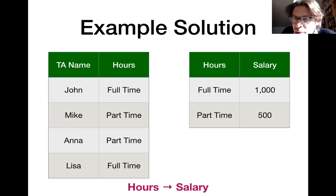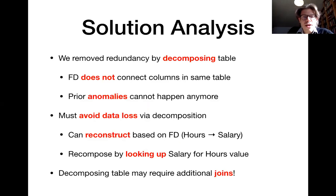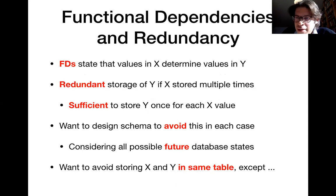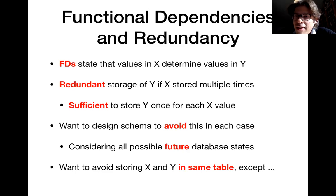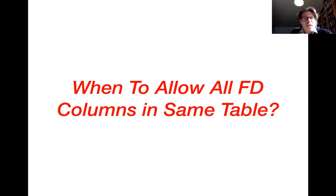The solution is to decompose tables such that functional dependencies do not hold within the same table anymore — and here we essentially resolve the redundancy problem. One exception is if the functional dependency states that knowing the value in key columns implies the values in other columns. In this case, you cannot have redundancy because in your database you can only store one row with the same values in the key columns.